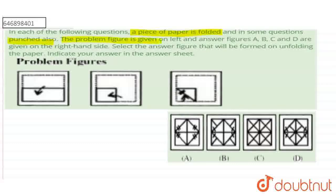So the problem figures are given on the left side and the answer figures A, B, C and D are given on the right hand side. We need to select the correct answer figure which will be formed upon unfolding the paper. So let's solve this question.